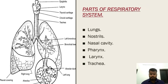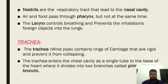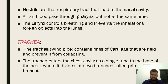Parts of the respiratory system include the lungs, nostrils, nasal cavity, pharynx, larynx, and trachea. Nostrils are the respiratory tract that leads to the nasal cavity. Air and food pass through the pharynx, but not at the same time. The larynx controls breathing and prevents the inhalation of foreign objects into the lungs.